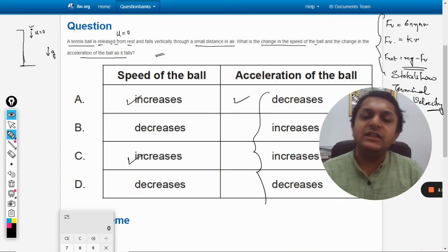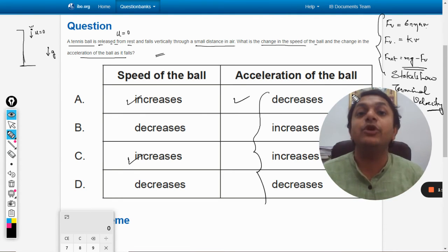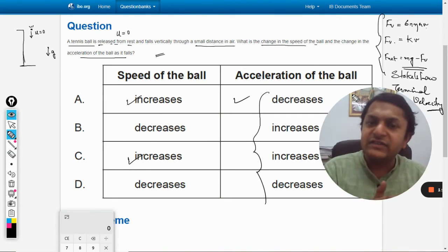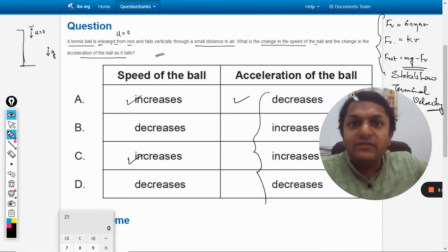But anyways, for our question the answer will be A. The speed of the ball will keep on increasing up to some point, after it it will become constant, but initially it will increase. And acceleration will keep on decreasing, the maximum value will be gravity and it will decrease and it will become zero after some time when the terminal velocity is attained.